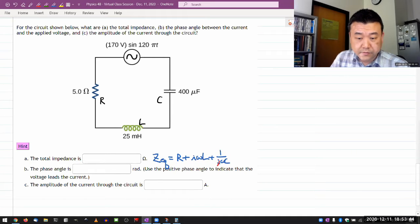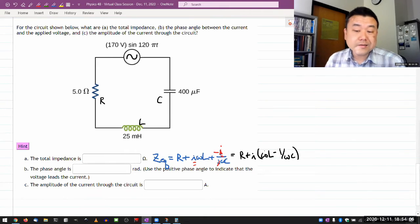One over i can be written as minus i. So since I have i's both here, I can factor that out to get me this simplified expression, r plus i times omega L minus one over omega C.